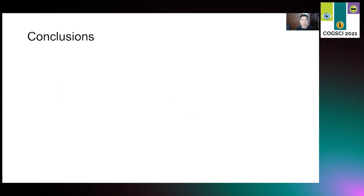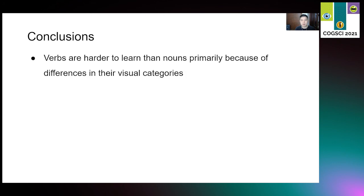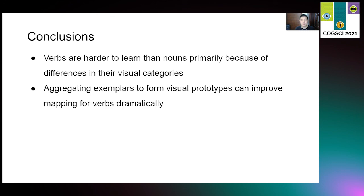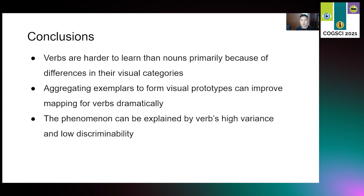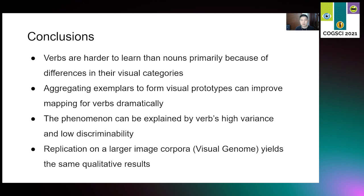In conclusion, in this project, we applied the alignability metric to nouns and verbs to explain the difficulty in acquiring verbs. We showed that verbs are harder to learn than nouns primarily because of the differences in their visual categories. And we discovered that verbs become almost as easy to learn as nouns when multiple examples are aggregated together. Finally, we proposed that this phenomenon can be explained by verbs' high variance and low discriminability compared to nouns. Note that we also replicated all the experiments on a larger dataset called Visual Genome with 355 nouns and 356 verbs. The analyses yield the same qualitative results, which strengthens the validity of our findings.